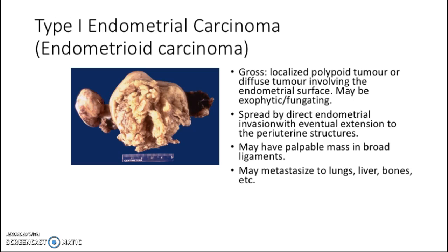Grossly, Type 1 endometrial carcinoma presents as a localized polypoid tumor or diffuse tumor involving the endometrial surface, and may be exophytic or fungating. In this picture, the uterus has been cut in half and the surface is covered by a polypoidal tumor covering the endometrial surface. It spreads by direct endometrial invasion with eventual extension to periuterine structures, and may metastasize to the lungs, liver, bones, and so on.